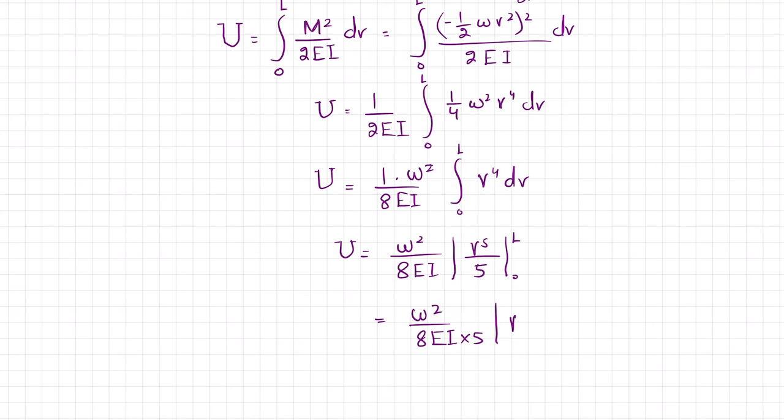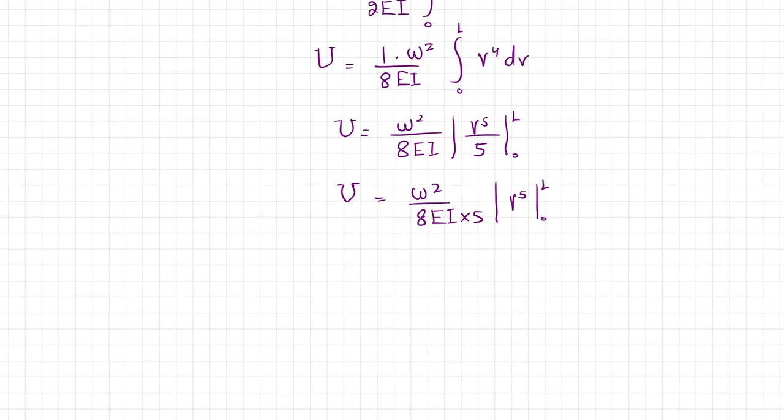The integral of V to the fourth dV is V to the fifth over 5, so we substitute the limits: L to the fifth minus 0.